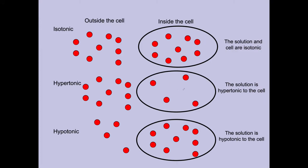Here's a schematic giving the same example. At the top, there's an equal number of solute molecules outside the cell as inside — isotonic. If our cell is placed in a hypertonic solution, the concentration of solutes is higher outside than inside. This is going to affect the water concentration. In a hypertonic solution, solutes may move into the cell if they're able to, and water is going to move out.